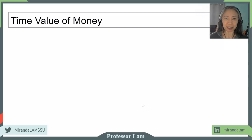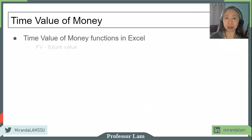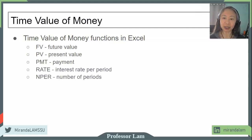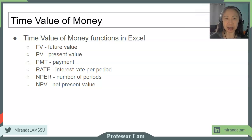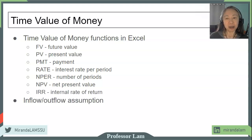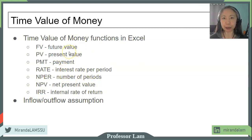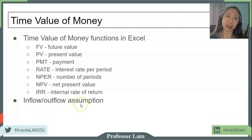We assume that you have some basic knowledge of time value of money, and the discussion here focuses on using Excel as a tool to help you compute time value of money. Here are the functions in Excel that will enable you to compute the future value, present value, payment, interest rate, and number of time periods, and also net present value. If you have experience with time value of money using other methods such as a financial calculator, the translation into Excel is relatively straightforward. The Excel functions make the same inflow-outflow assumption. When we are solving for interest rate, Excel assumes that either your future value is an inflow and your present value is an outflow, or vice versa. If you do not conform to this assumption in Excel, you end up with an error, and we'll go over some examples.